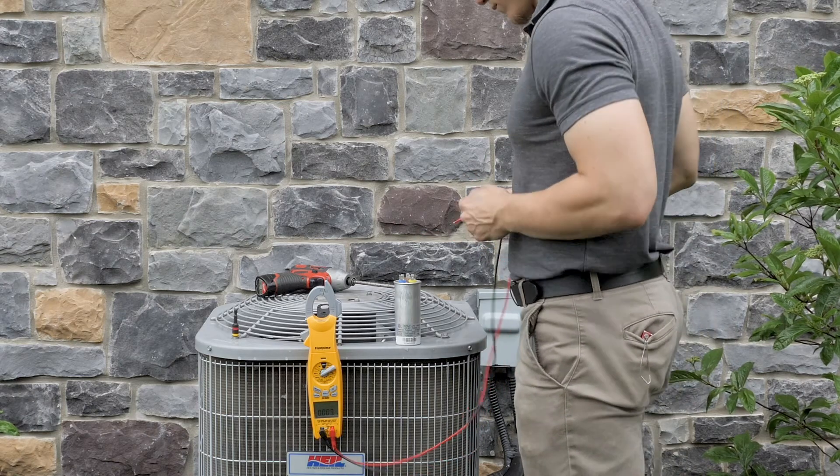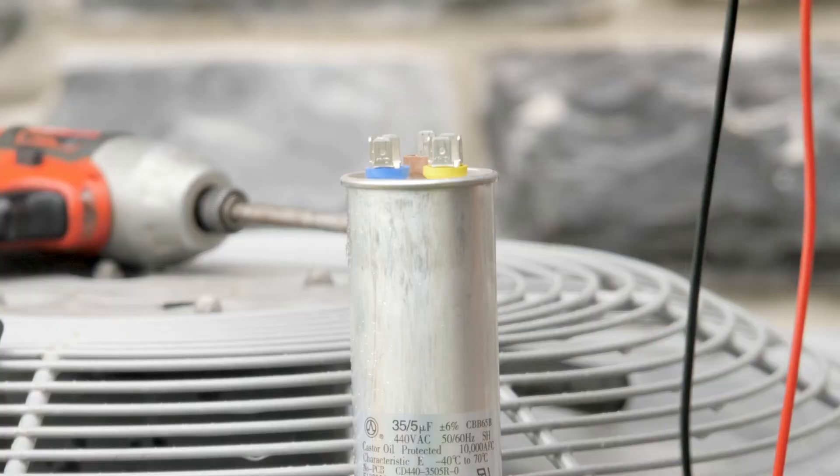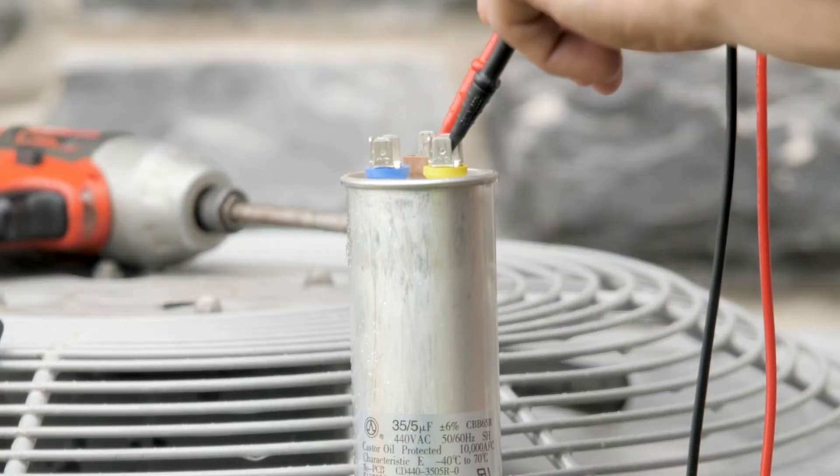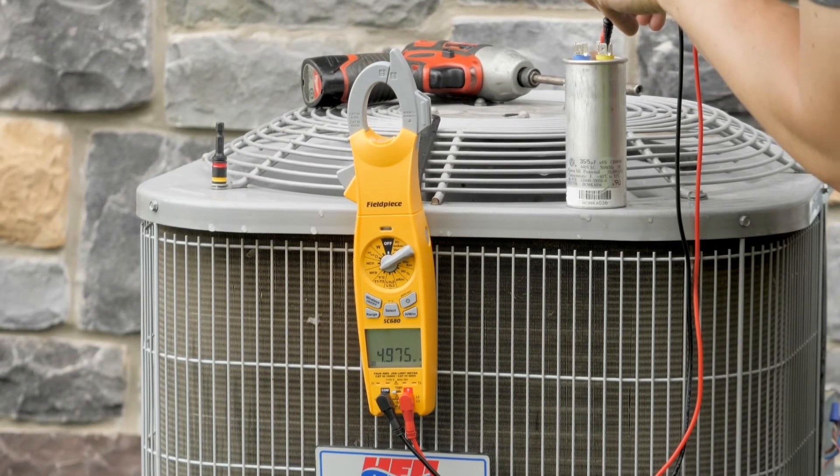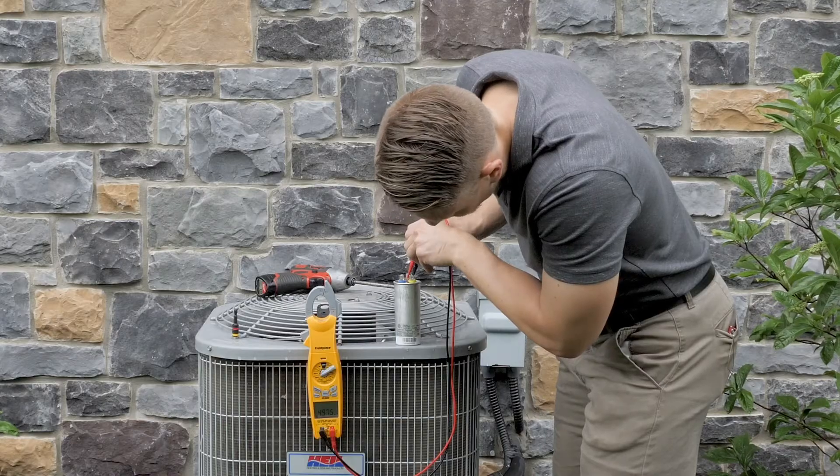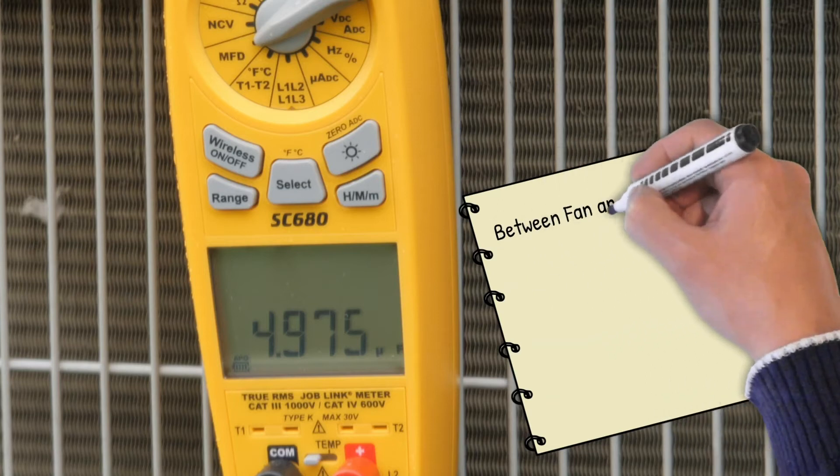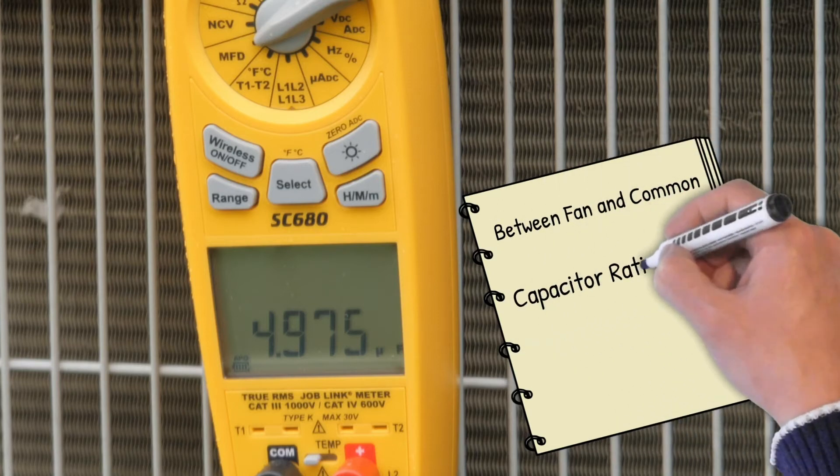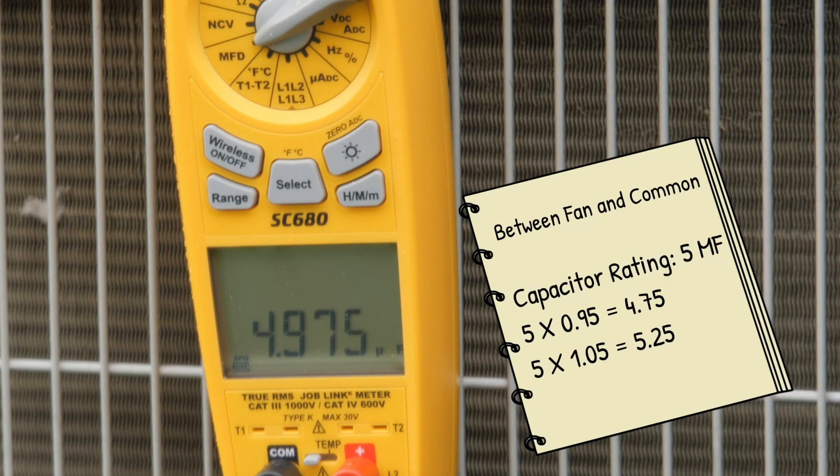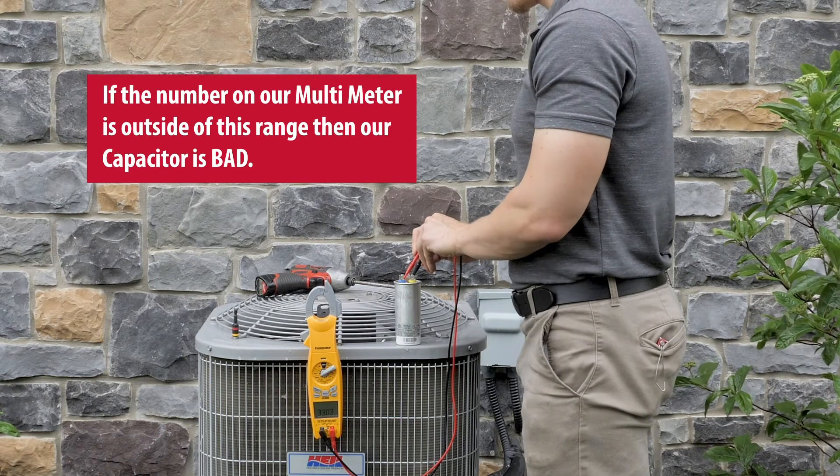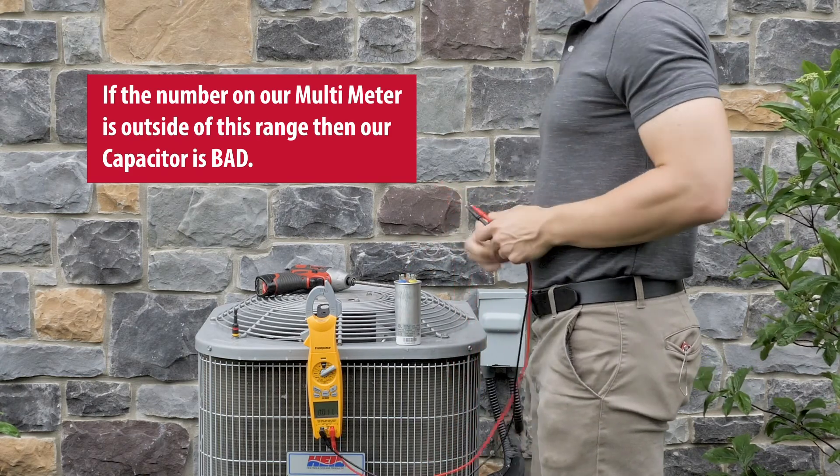Now it's time to check the capacitor. We'll start by measuring between the fan and common terminals. We're looking for a number between 4.75 and 5.25. We get this range by multiplying our capacitor rating of 5 microfarad by 0.95 and 1.05. If the number on our multimeter is outside of this range, then our capacitor is bad.